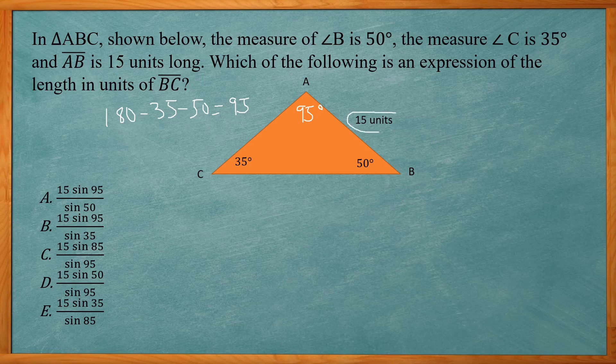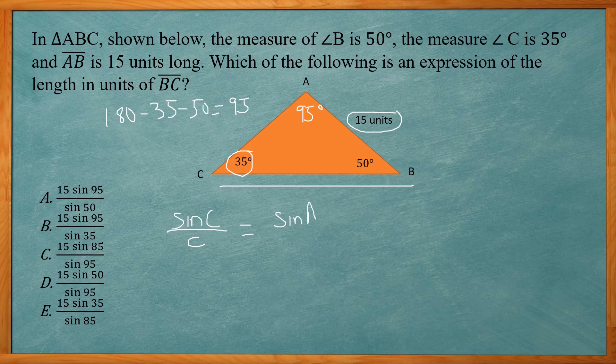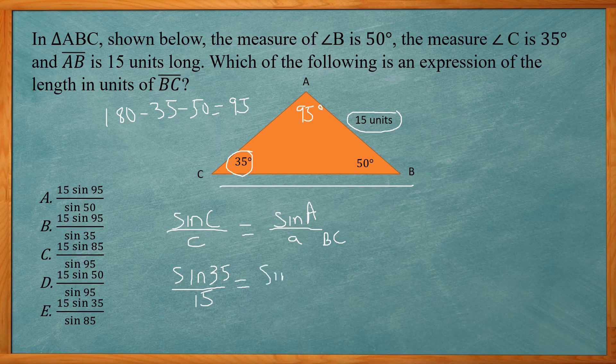For this one we have side c and angle c, and we want to find side BC. So we're going to use the 15 and 35 and the 95 to figure out side BC. We're going to set up our law of sines: sine of angle C over side c equals sine of angle A over side a, which in this case is BC. So sine C is going to be sine 35 over 15 equals sine of 95 over side BC.